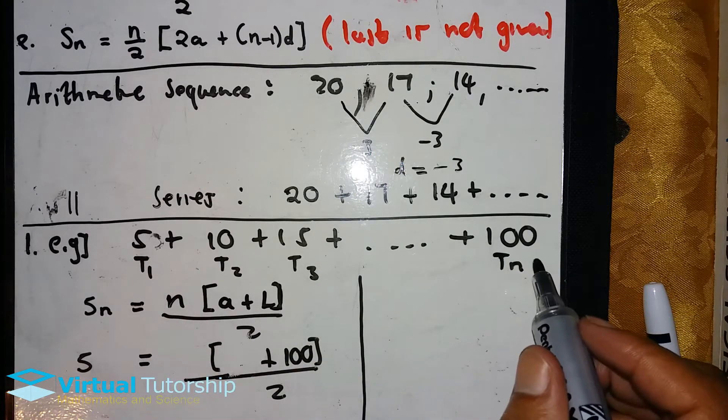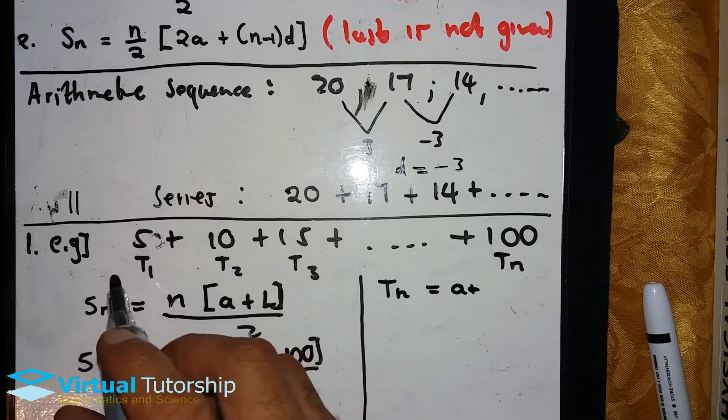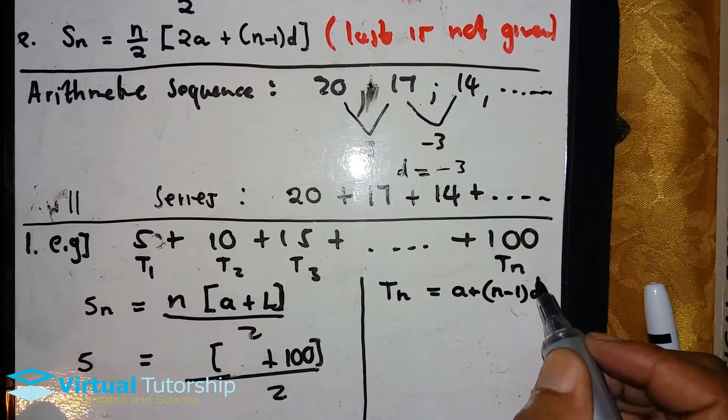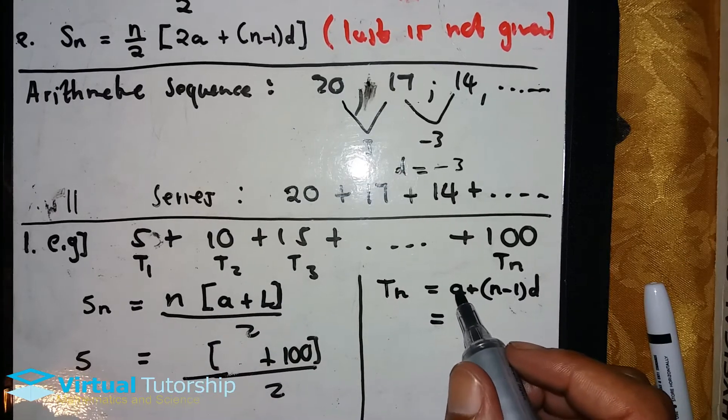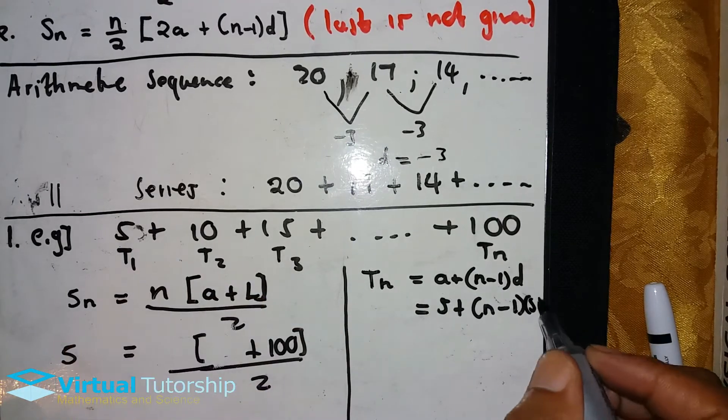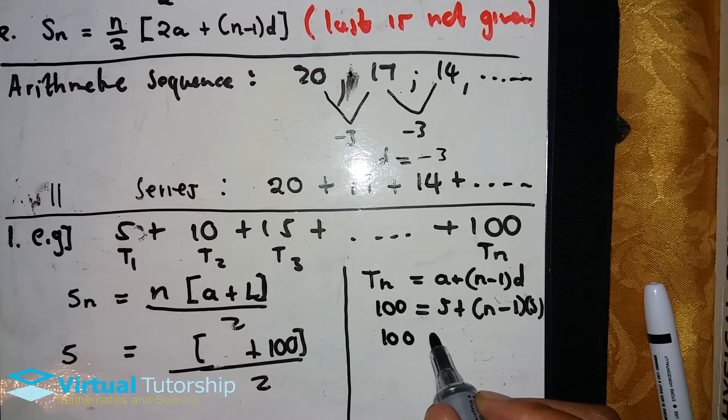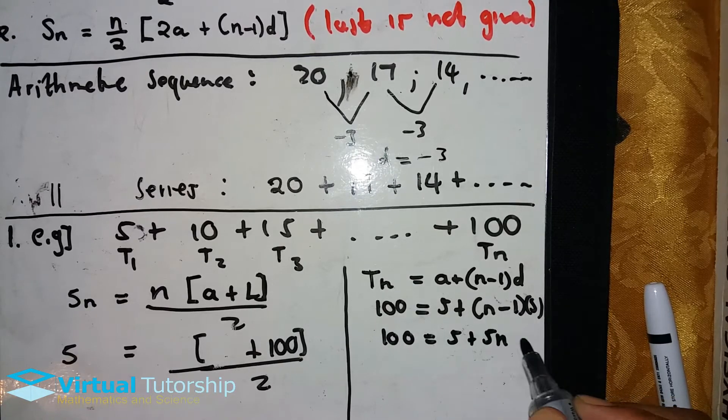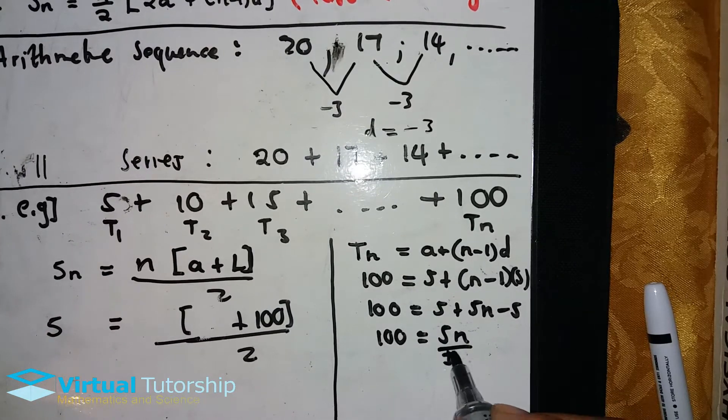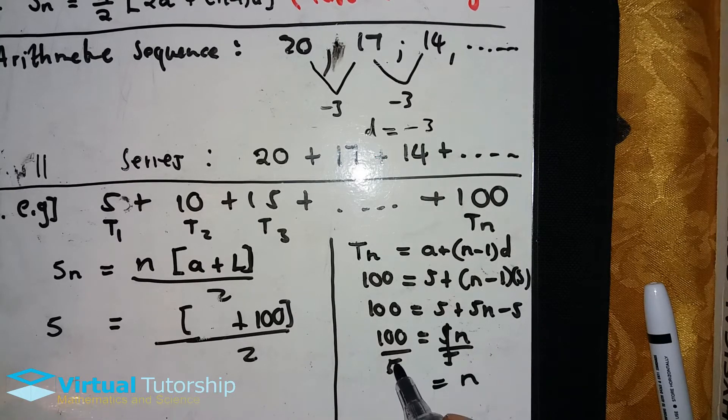Before we use the formula, we need to calculate the value of n, the position of 100 in the series. Using the arithmetic sequence formula: Tₙ = a + (n-1)d. So a is 5, d is 10 minus 5 which is 5, and Tₙ is 100. Simplifying: 100 = 5 + 5(n-1), which gives 100 = 5n, so n = 20.